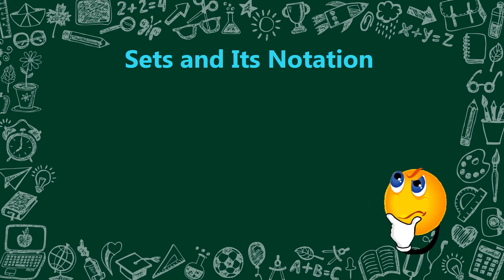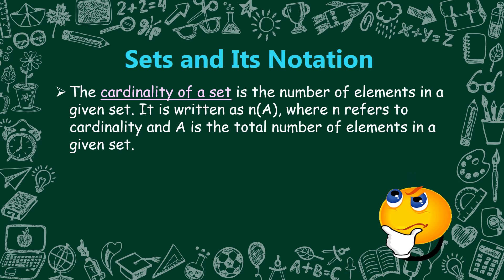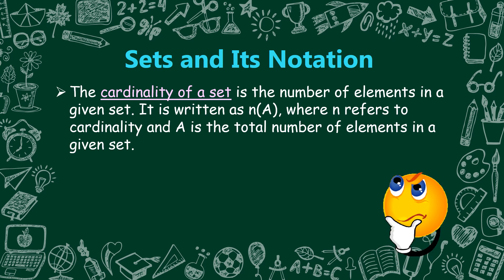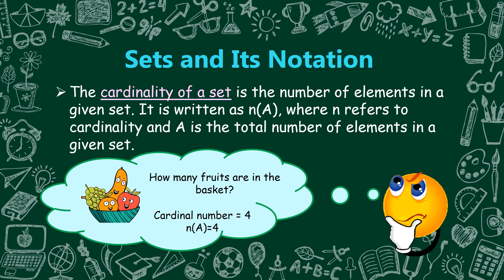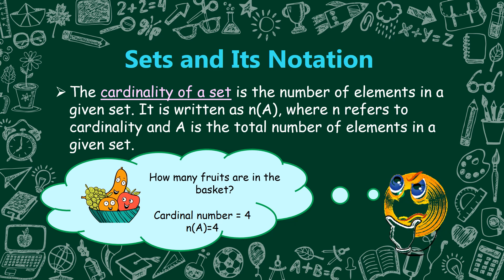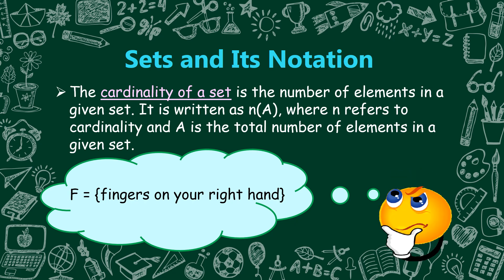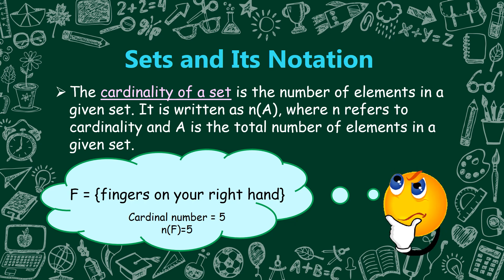Next, let's discuss the cardinality of a set. The cardinality of a set is the number of elements in a given set. It is written as N of A, where N refers to the cardinality and A is the total number of elements in a given set. Example: how many fruits are in the basket? We have 4 — so the cardinal number is equal to 4, or in symbols, N of A is equal to 4. Another example: F is equal to fingers on your right hand. The cardinal number is equal to 5, so N of F is equal to 5.